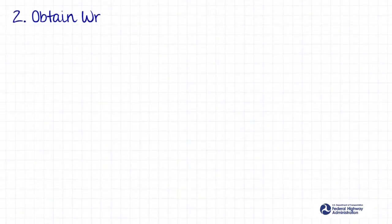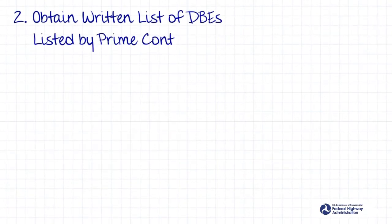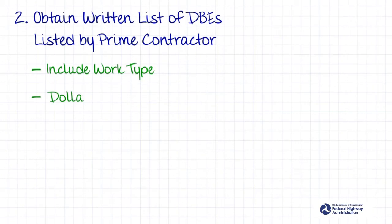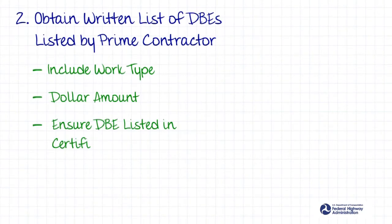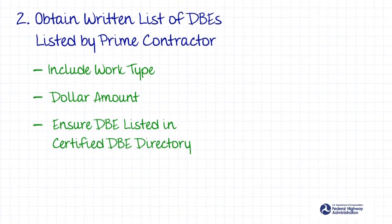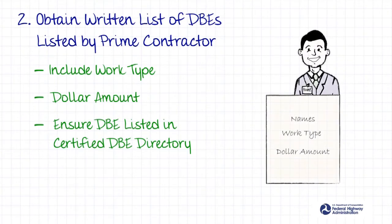Obtain a written list of the DBEs named by the prime contractor. This should include a description of the type of work and the dollar amount of the subcontract. Ensure that DBEs identified on the federal aid contract are certified for the type of work they're performing, using your state's certified DBE directory.